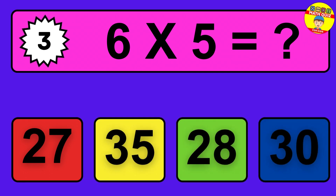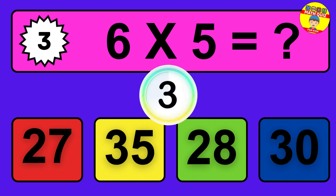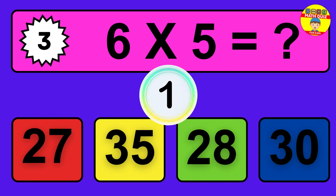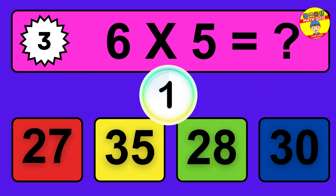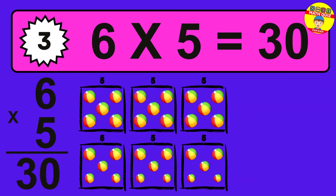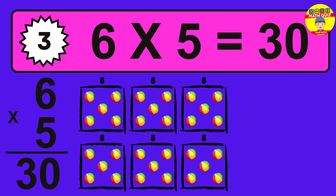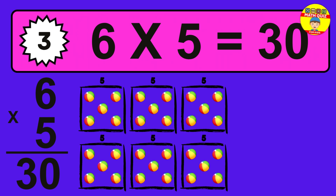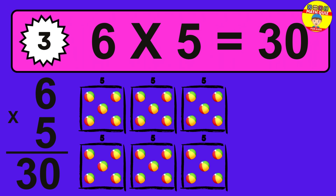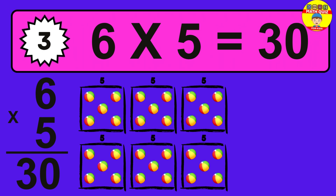Question 3. 6 times 5 equals what? The answer is 6 times 5 is 30. To calculate, we have 6 groups with 5 balls each one. So how many balls do we have? 30 balls.